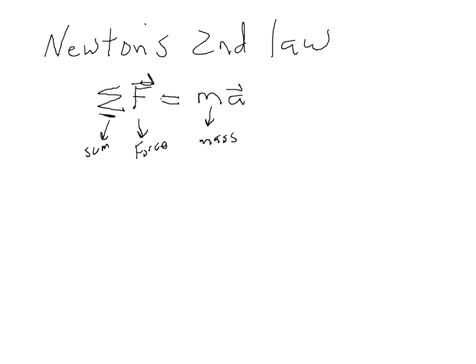Newton's second law tells us what happens if there is a net force on an object: it will accelerate. In other words, it will not continue moving at the same speed and direction — it will change either direction or speed or both. How much will it accelerate? Well, that depends on the mass. An object with a large mass will not accelerate very much, while an object with a small mass will accelerate more.